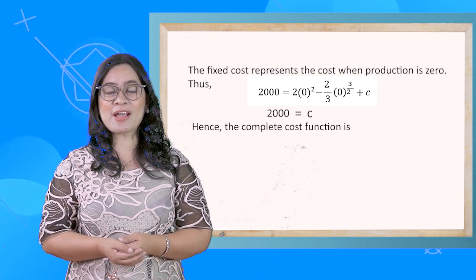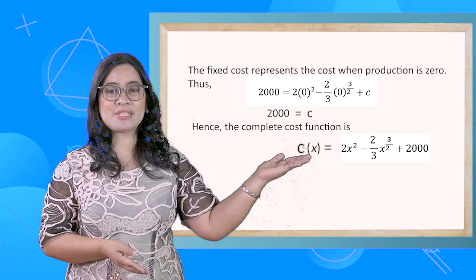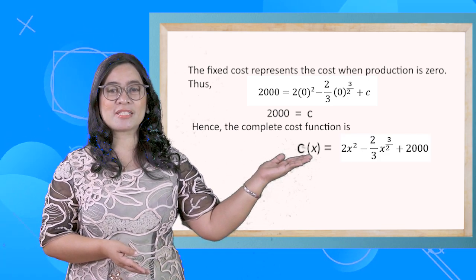Hence, the complete cost function is C(x) = 2x² - (2/3)x^(3/2) + 2,000.